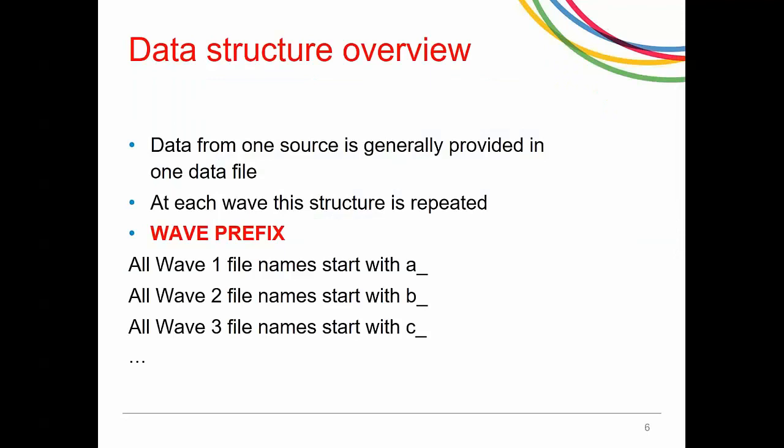Data from one source is generally provided in one data file and the same structure is repeated every wave. The first year of data collection is referred to as wave 1, the second year as wave 2, and so on. To make it easier to use, all files share the same root name but a letter prefix is added to differentiate the wave — so in wave 1, file names start with A underscore; in wave 2, B underscore; and so on.